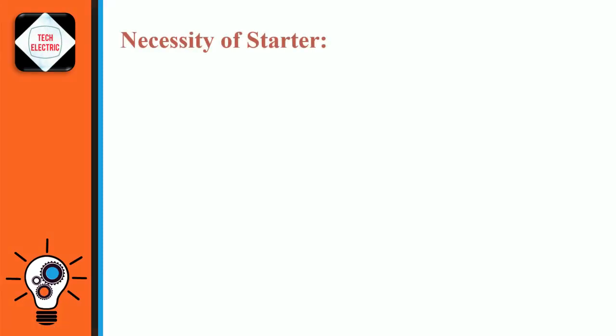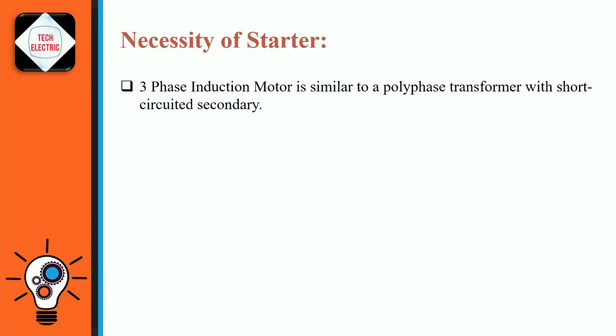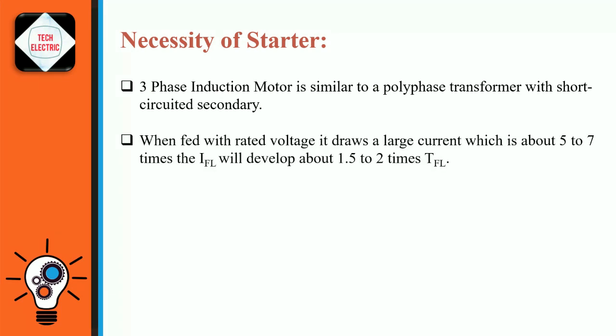Before starting with the construction and working of Auto Transformer Starter, let's quickly understand its necessity. Three-phase induction motor is similar in action to a polyphase transformer with short-circuited secondary. Therefore, when a rated voltage is applied to the stationary motor, it will draw a large current which is about 5 to 7 times the full-load current and will develop about 1.5 to 2 times full-load torque.